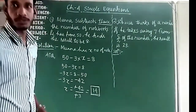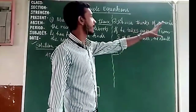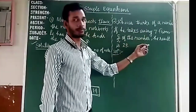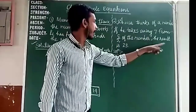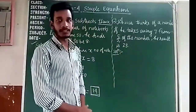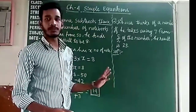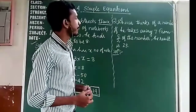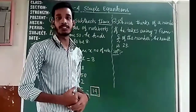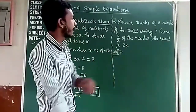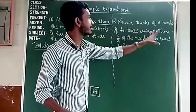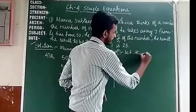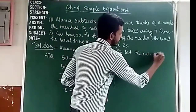Let's see the next question. Anwar thinks of a number and takes away 7 from 5 by 2 of that number, and the result is 23. The unknown value is taken as a variable. So let that number be x.